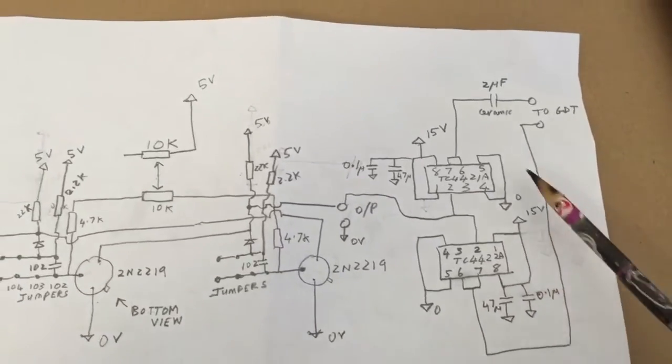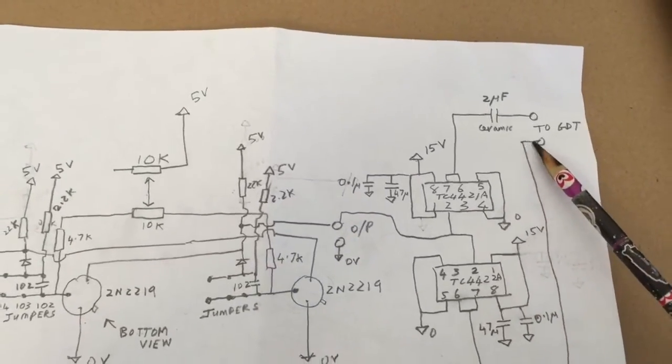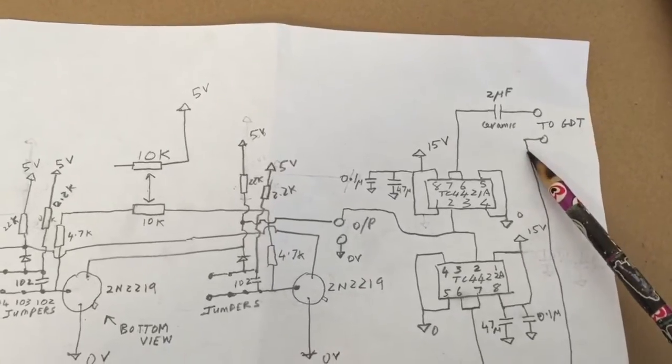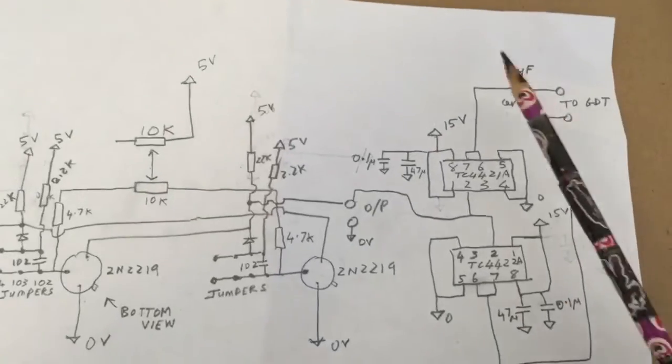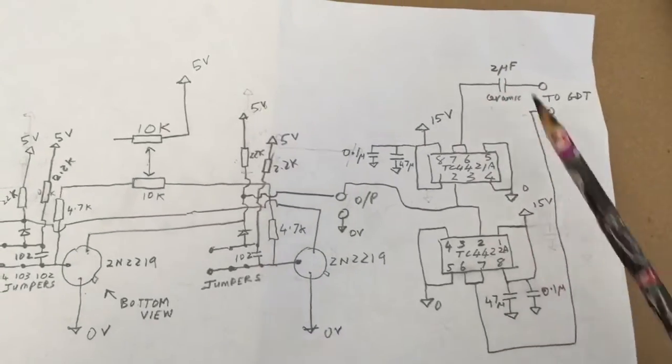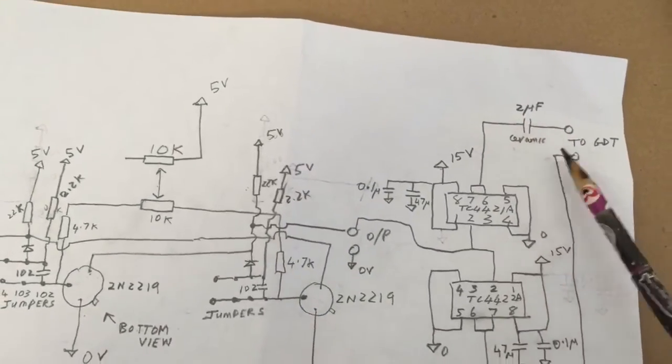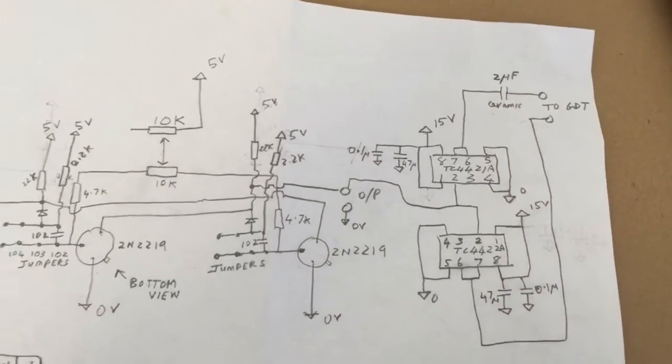What we do is take the output of these and put that into a gate drive transformer. This 2 microfarad ceramic capacitor is to prevent DC current from locking these things up, so this prevents DC and just allows the AC to go through.